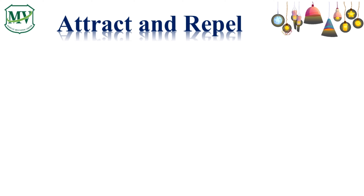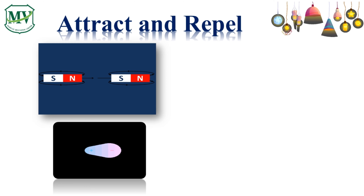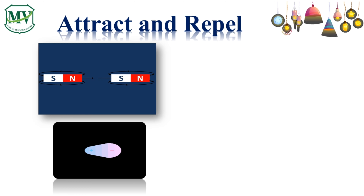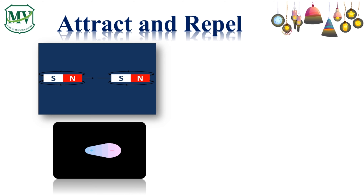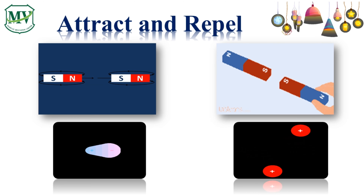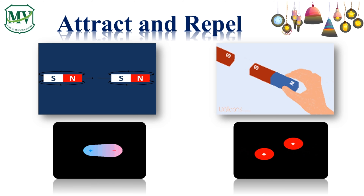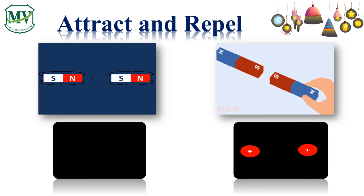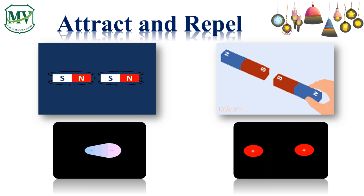When you hear the words attract and repel, what comes to your mind? It could be magnets, poles, or charges. Look at the video. What can you say about it? The two poles are the same, and because the poles are the same, they repel each other. Two of the same charges repel each other. Understood?